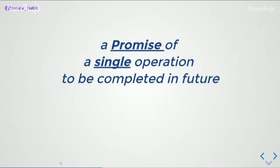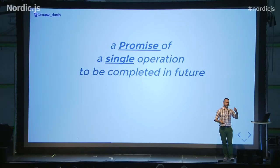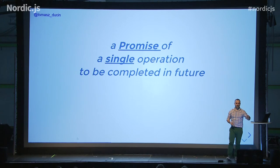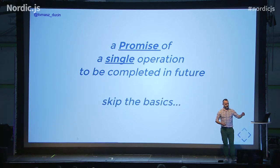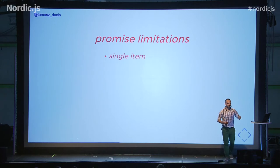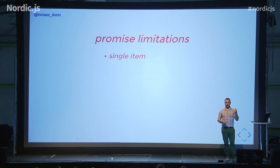A promise is an object that represents an operation in the future. Let's skip the basics and concentrate on promise limitations. A promise can represent only a single item. If we want to resolve a promise with multiple items, we'd have to wrap them in an array or object, adding destructuring overhead at the next step. Also, a promise is a one-time item — once it settles, we cannot reuse it. We'd have to create another promise.